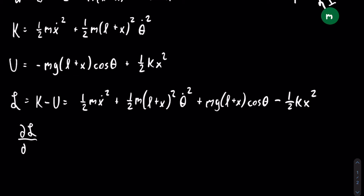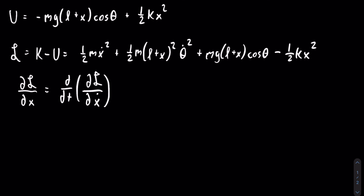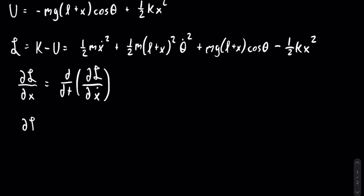The first equation we'll be using is with x, as shown on the screen. The first thing we need to find is the partial of the Lagrangian with respect to x, and this is going to be equal to m times the quantity l plus x, times theta dot squared, plus mg times cosine of theta.